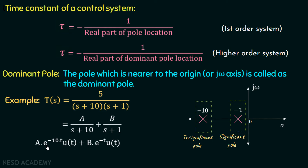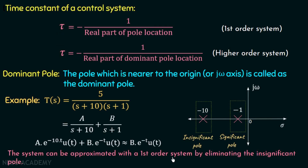Comparing these two terms at t = 1 second, the first term becomes A·e^(-10) and the second becomes B·e^(-1). Since e^(-10) is a very low value compared to e^(-1), we can say that A·e^(-10t)·u(t) + B·e^(-t)·u(t) is nearly equal to B·e^(-t)·u(t). Because even at t = 1 second, the value e^(-10) is negligible compared to e^(-1). That's why we can approximate this function as B·e^(-t)·u(t), and this is the reason the pole at s = -10 is regarded as the insignificant pole. So the system can be approximated as a first order system by eliminating the insignificant pole.